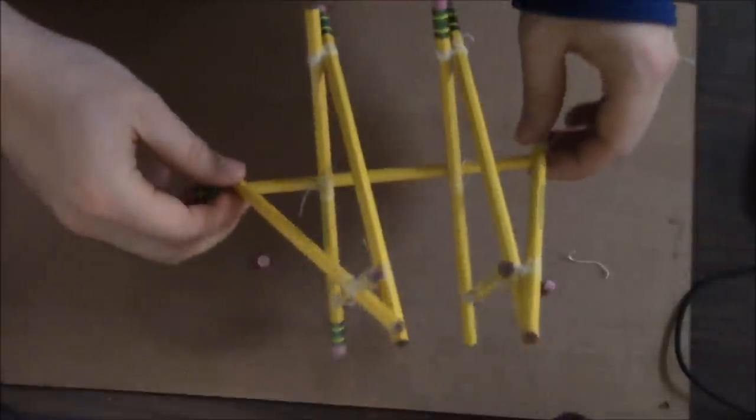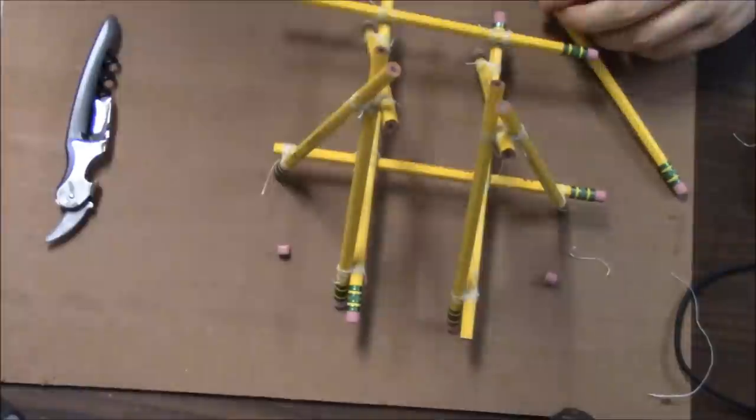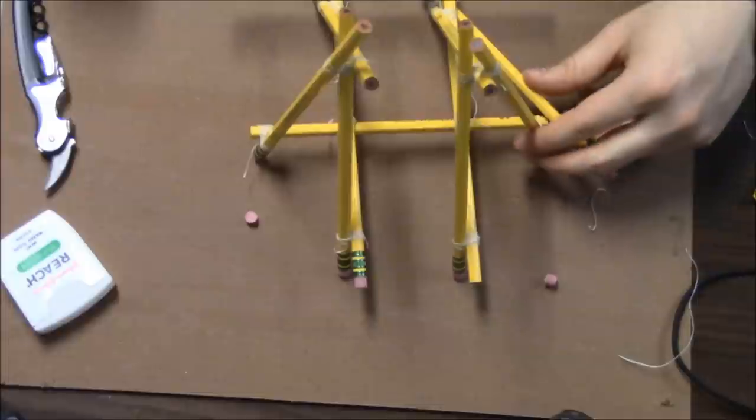It looks much better, but the A-frames can still rotate around the vertical axis. I fix this by adding another crossbar and a diagonal support in the horizontal plane.